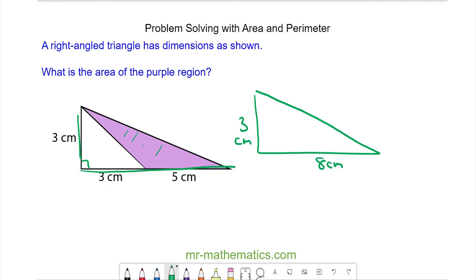So the area of the triangle is half that of a rectangle. The rectangle would be 3 centimeters multiplied by 8 centimeters which is 24 centimeters squared. The triangle would be half of that which is 12 centimeters squared.